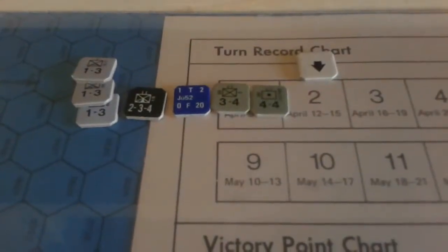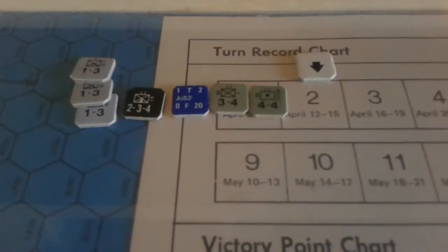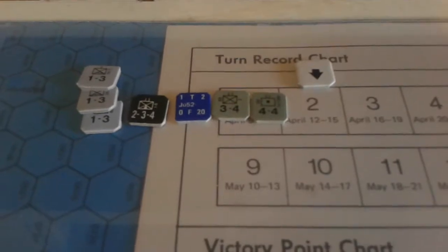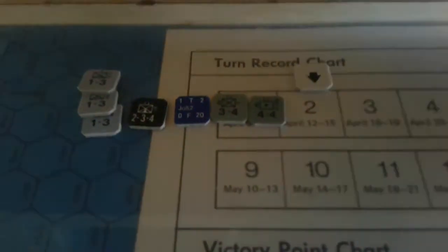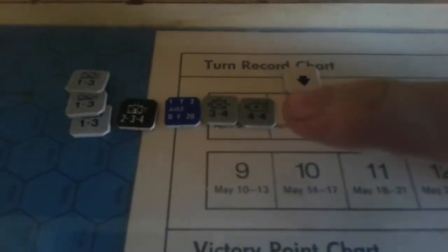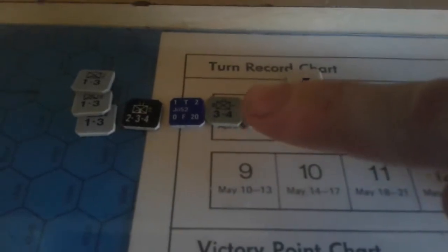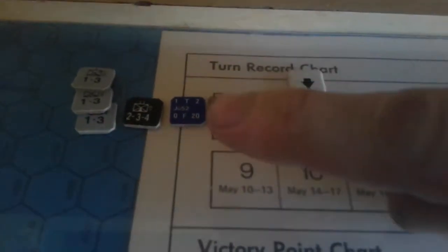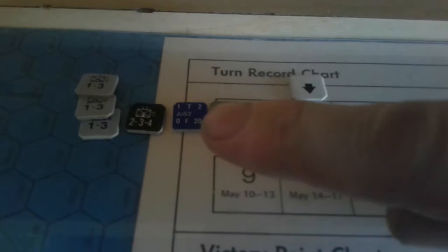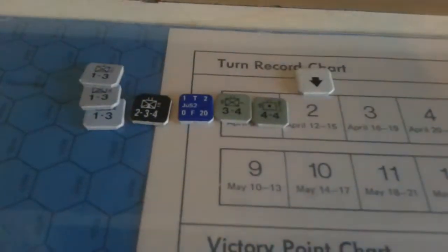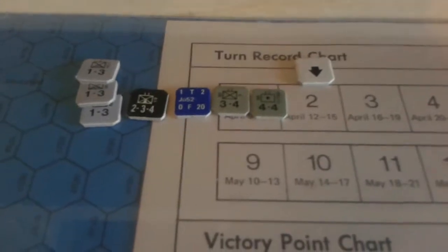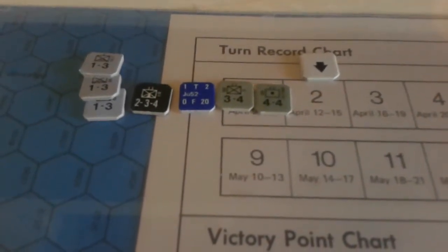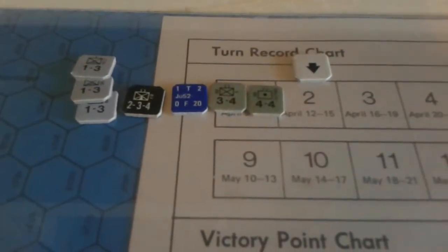I'm just about to start turn two of my second game of Narvik. You can see all the losses from turn one: an artillery battalion, an infantry battalion, an aircraft squadron, and all three parachute companies for the German side, and on the Norwegian side one mountain battalion.